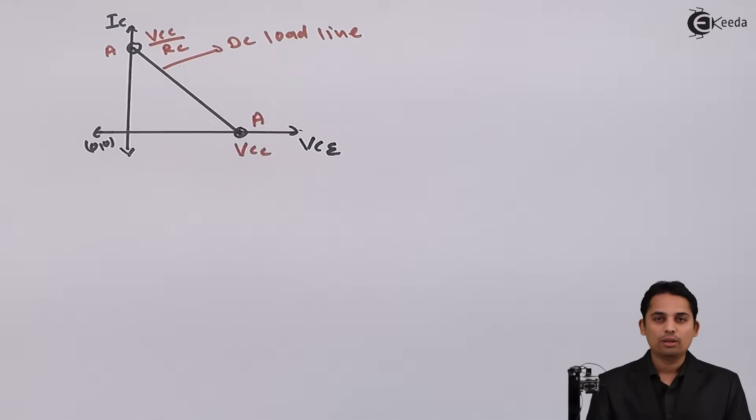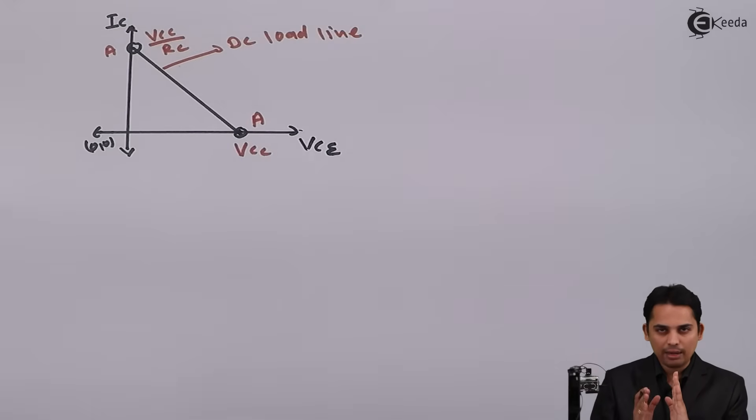Now, what we can do is we can get something called operating point Q. Operating point Q is defined as: it is a point for a particular value of IC and for corresponding value of VCE.